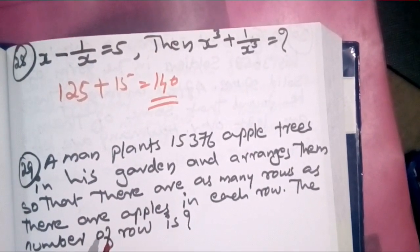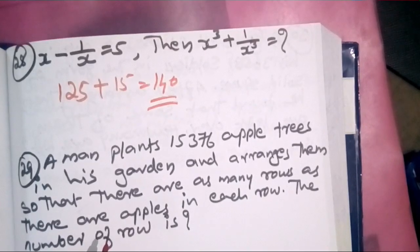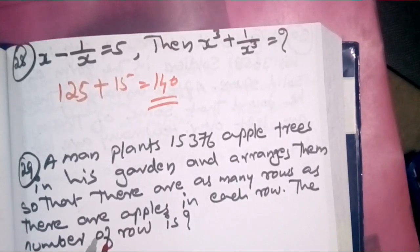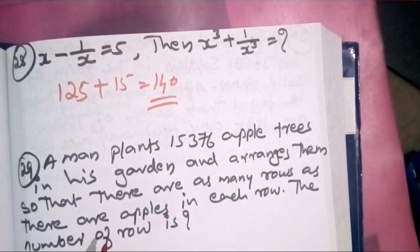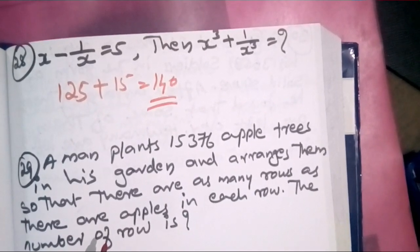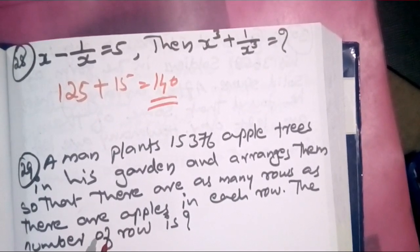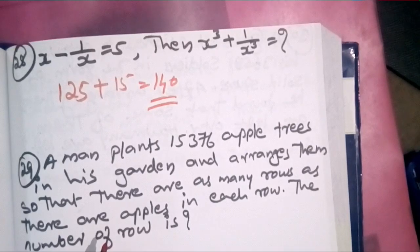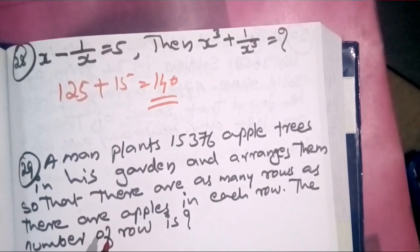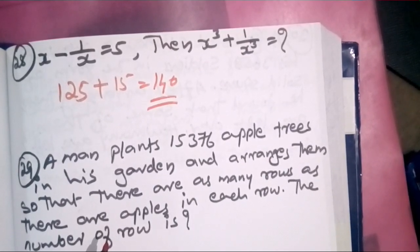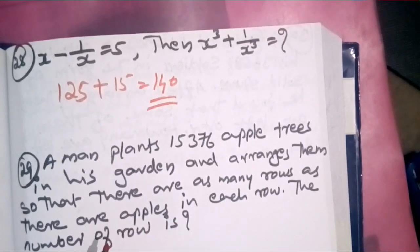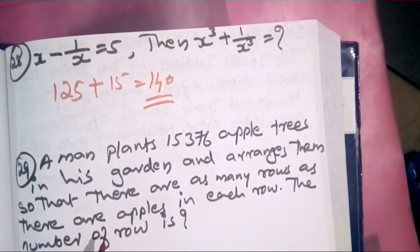Let us write down a cube. If x minus 1 by x equals 5, then x cubed plus 1 by x cubed. If 1 plus 1 by x equals 5, then x squared by x squared is what we compute.